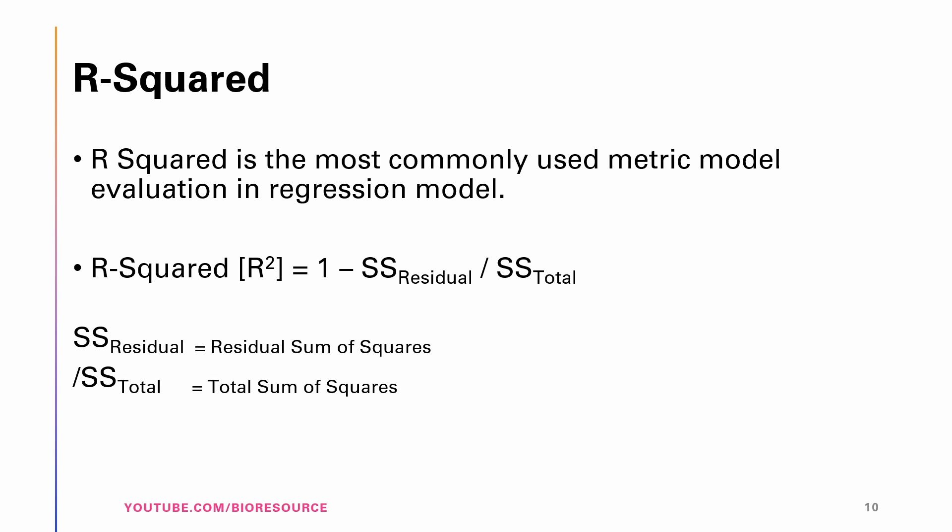What is R-squared? The most commonly used metric for model evaluation in regression analysis is R-squared. R-squared is defined as the ratio of variation to the total variation, and the value of R-squared lies between 0 and 1. We will discuss R-squared in more detail in coming videos.